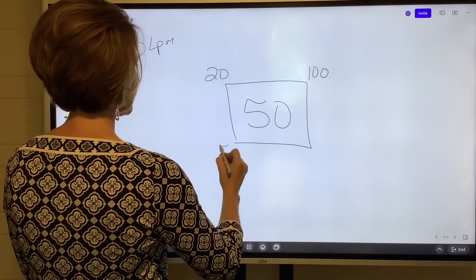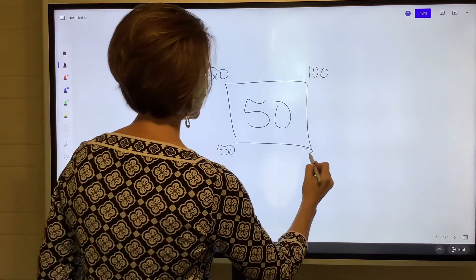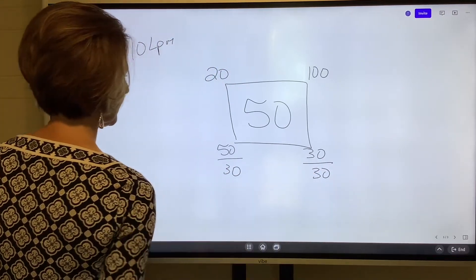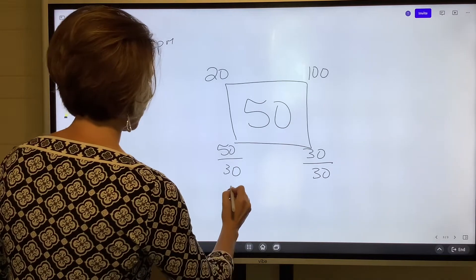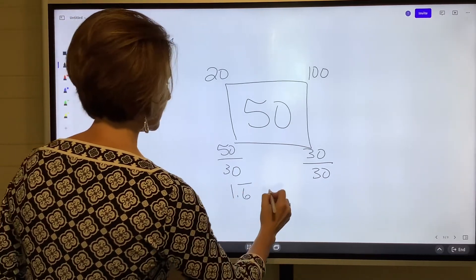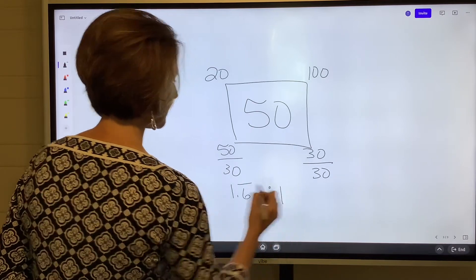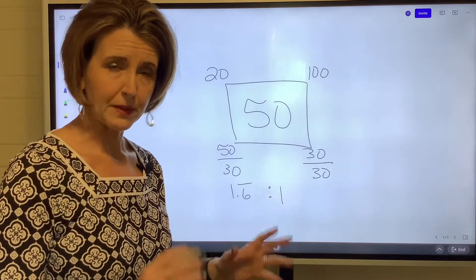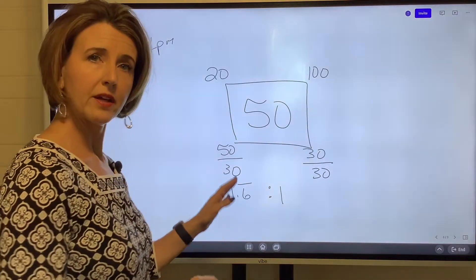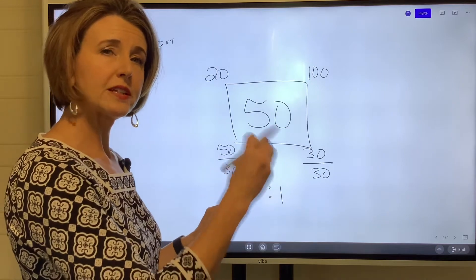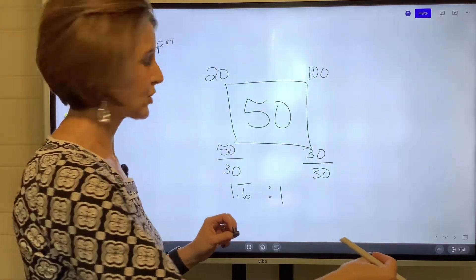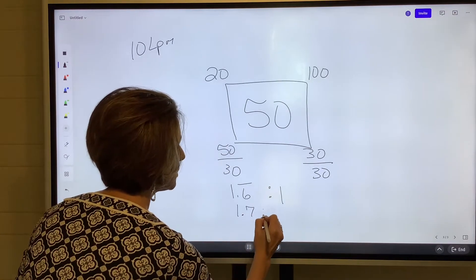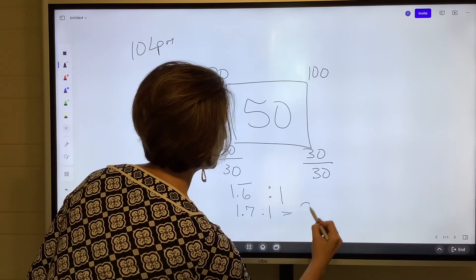100 minus 50 is 50. 50 minus 20 is 30, and this comes out to 1.6 repeating to 1. When your FiO2 in the box is 50% or higher, the best practice is to round the air to oxygen ratio to the nearest tenth position. So 1.6 repeating comes to 1.7 to 1. That's a total of 2.7.